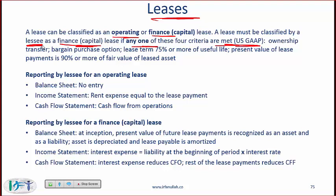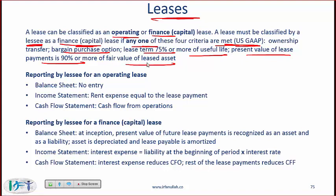The four US GAAP criteria are: ownership transfer at the end; a bargain purchase option whereby the lessee can buy the asset at a very low price; a lease term of 75% or more of the useful life; or the present value of lease payments is 90% or more of the fair value of the leased asset. Effectively, where most of the utility of the asset is transferred to the lessee, it should be treated as a finance lease. IFRS says more or less the same thing but in more general terms.